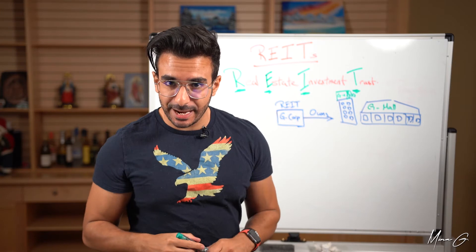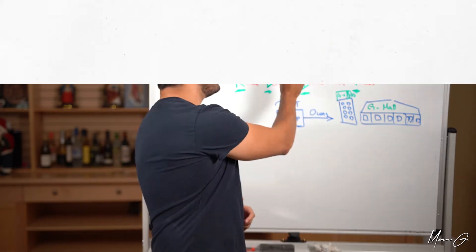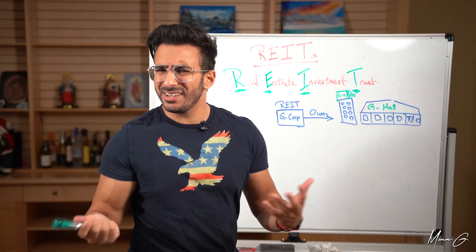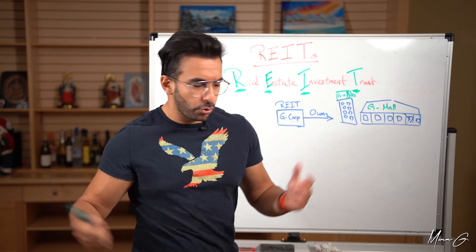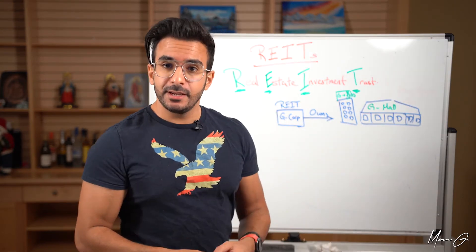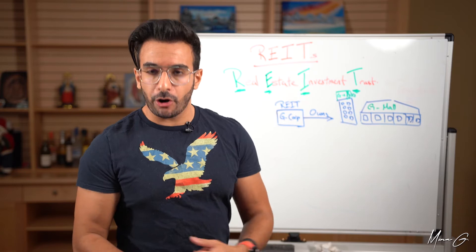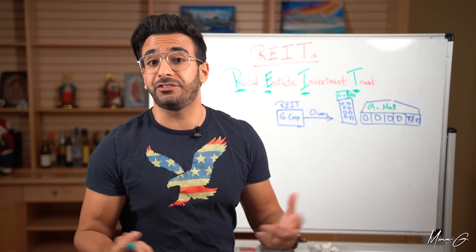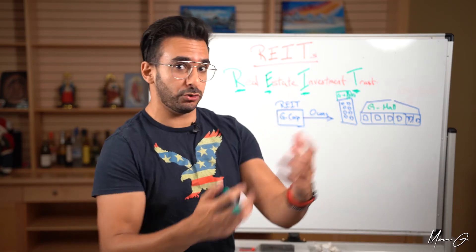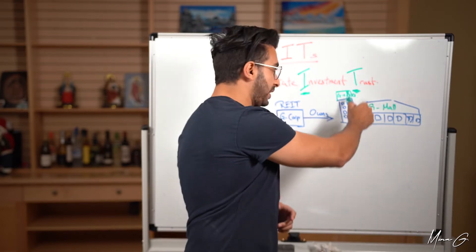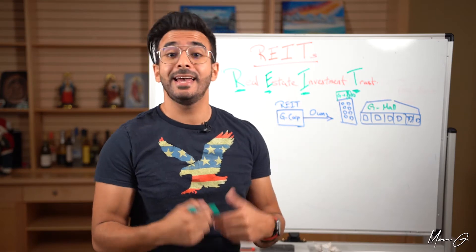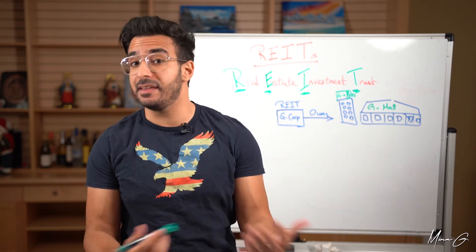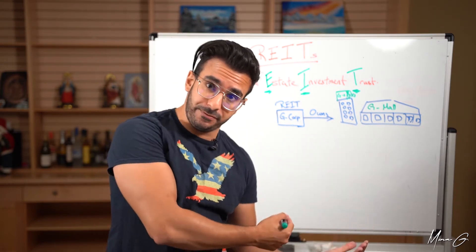So now to the second type of real estate investments, which is REITs, R-E-I-T, which is real estate investment trust. So what does that mean? So this is what it looks like. We have here a company, let's call it G Corp. And that company's a REIT. So this company would typically own a very large and mostly commercial real estate that would otherwise be inaccessible to normal folks. Let's call this building G offices and G mall. They have like a whole bunch of them across the country.